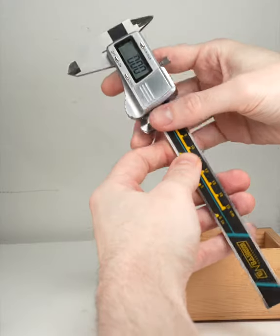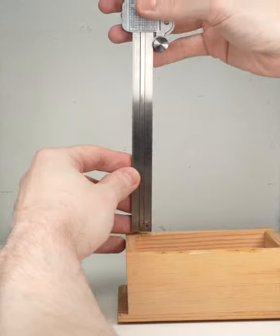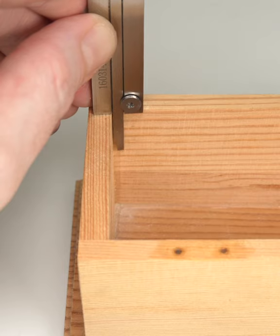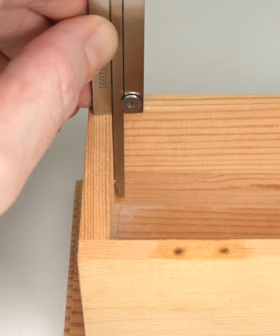And you can measure depth by holding the flat end of the calipers against a surface, and rolling the thumb wheel to extend this metal post down into the bottom of a cavity.